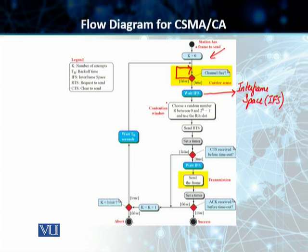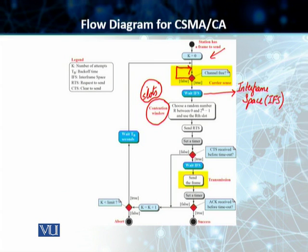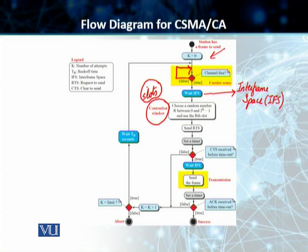After that, we go into another addition for CSMA/CA: the Contention Window. This contention window is an amount of time divided into slots. The station which has data to send chooses a random number of slots as its wait time. These slots make up a window — hence the name contention window. The number of slots in this window changes according to the binary back-off strategy, where the station doubles the number of slots every time it checks and cannot find an idle channel.